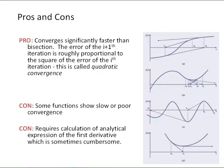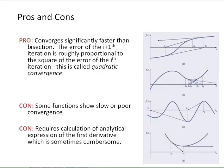So let's talk about some other pros and cons of Newton-Raphson. As we saw, it does converge significantly faster than bisection. In fact, we're not going to show it here, but you can show that the error of the i plus 1-th iteration is roughly proportional to the square of the error of the i-th iteration. This is called quadratic convergence, since it's proportional to the square.